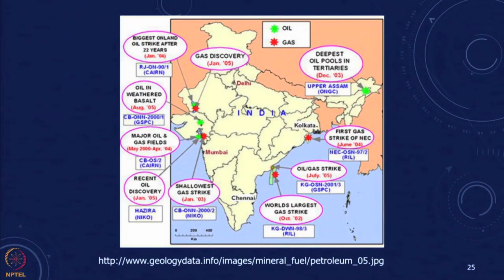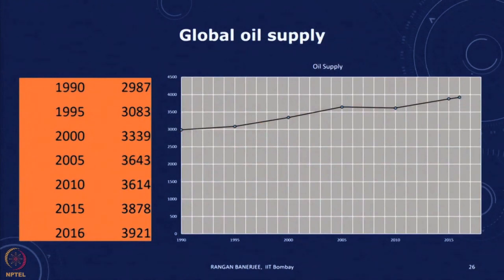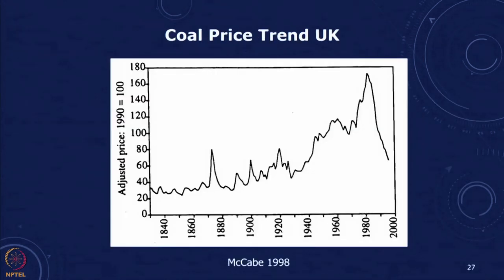The R by P ratio, or R by C ratio where C is oil consumption, is really very small — India does not have oil for even more than a decade if it were to meet total consumption from Indian resources alone. Most of India's oil comes from imports. Globally, oil supply has been increasing.